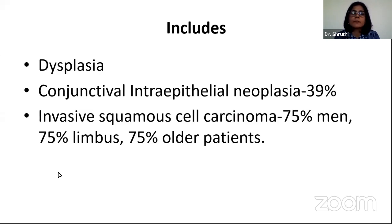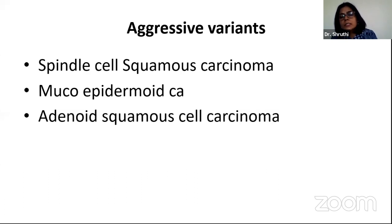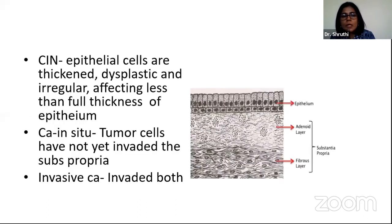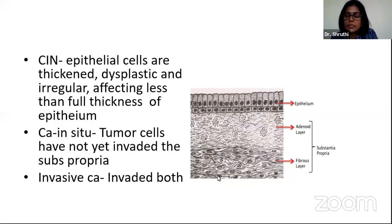OSSN includes dysplasia, conjunctival intraepithelial neoplasia, and squamous cell carcinoma. There are some aggressive varieties of OSSN: spindle cell squamous carcinoma, mucoepidermoid carcinoma, and adenoid squamous cell carcinoma. Carcinoma in situ and invasive carcinoma are what most pathologists report when we send OSSN specimens — either CIN, CA in situ, or invasive carcinoma.